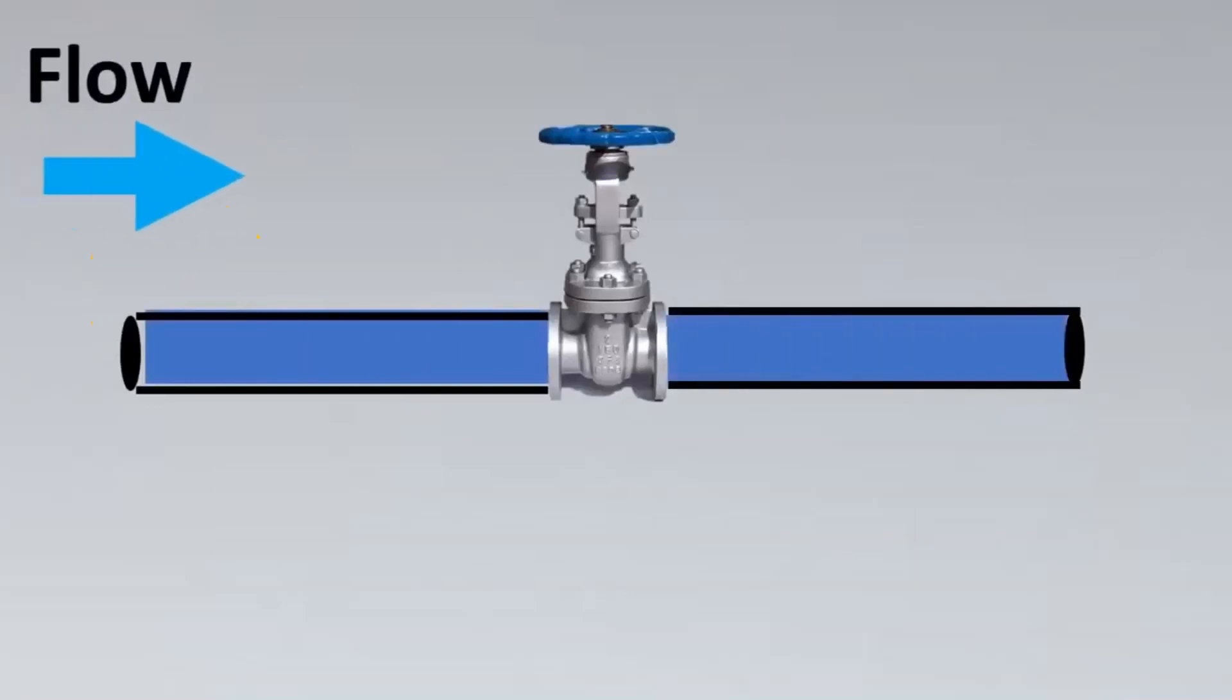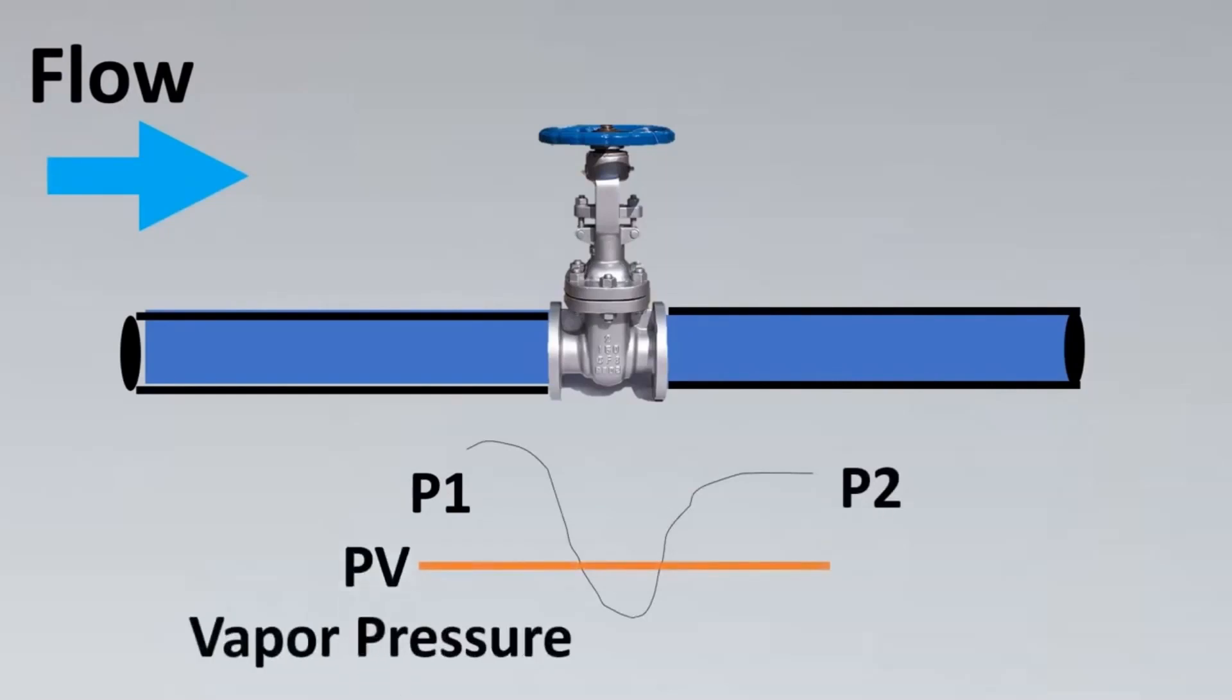Imagine this is your valve put in a line. With flow, there is some restriction, so you're going to have a DP or differential pressure created. The upstream pressure is P1 and the downstream pressure is P2. Now imagine that this is your vapor pressure curve. What happens when the fluid is at this particular region? The fluid changes from liquid state to vapor state at the point where the liquid changes to vapor phase.